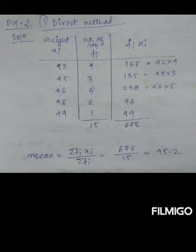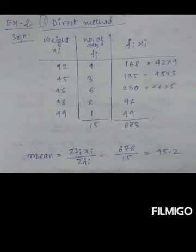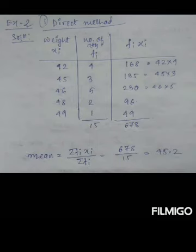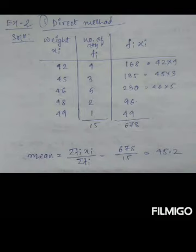Next, Example 2 falls under Type 2 data. For Type 2 data we can use two methods — direct method and shortcut method. I'll show the direct method first. The formula is: summation fi·xi divided by summation fi. xi is the variate — things like daily wages, weight, or height. fi is the frequency — number of students, workers, etc. We then create a third column fi·xi by multiplying the fi and xi columns.